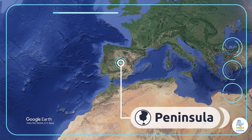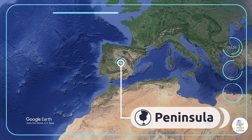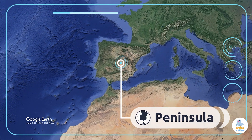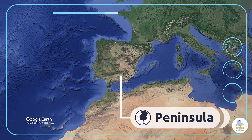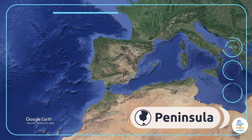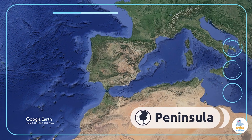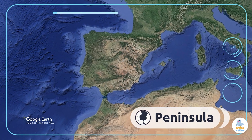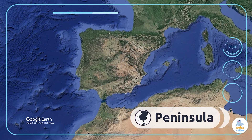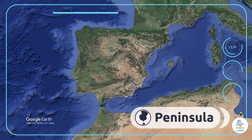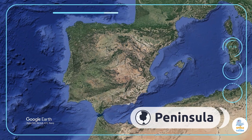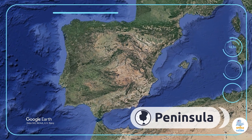Peninsula. A peninsula is a portion of land surrounded by water on three sides. Can you name a peninsula? That's it — the Iberian Peninsula!